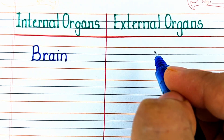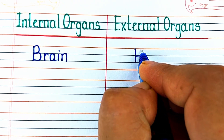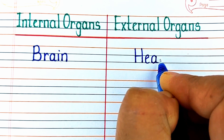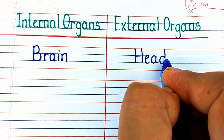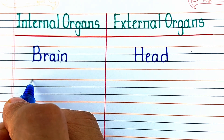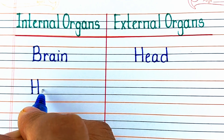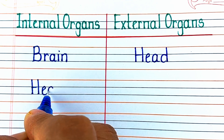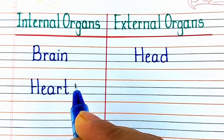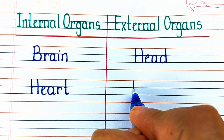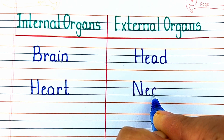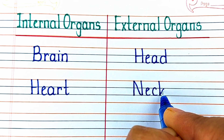Organs are specialized structures in your body that handle specific jobs. Some of the best known organs are heart, brain, or liver, but many other structures count as organs too. Organs are basically of two types: internal organs and external organs. Internal organs are located within the body, while external organs are located outside the body. Now let's start learning the examples of internal and external organs one by one.